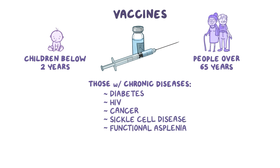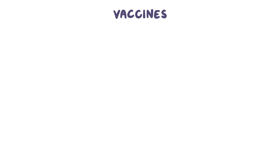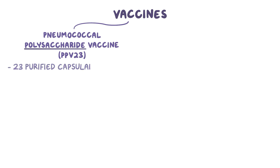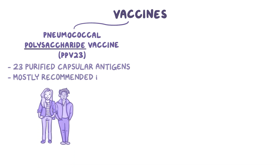Currently, vaccines against strep pneumoniae are divided into two main groups based on their mechanism of action. The first one is the pneumococcal polysaccharide vaccine, also known as PPV23, because it contains 23 purified capsular antigens, and this one is mostly recommended in adults.